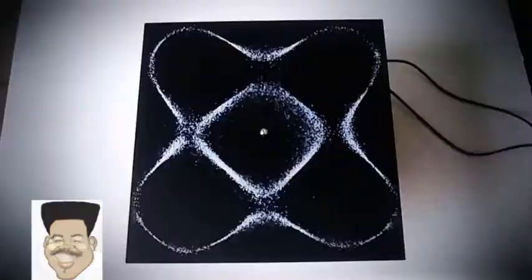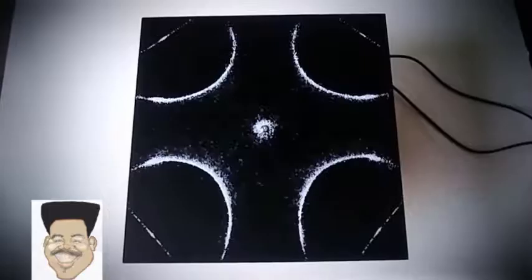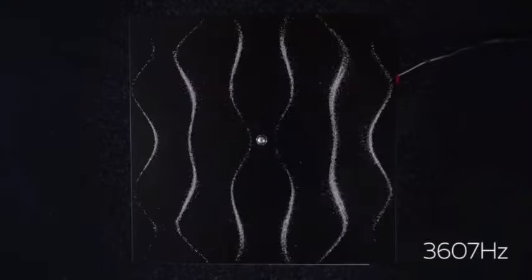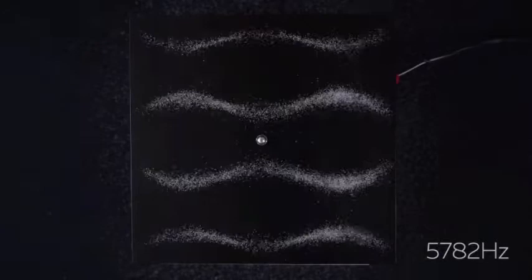Those sand particles start to bounce around and dance around and they start to form these mathematical circular patterns. As we move up through these frequencies, the sand goes into a chaos in-between state and then arrives at this next pattern.